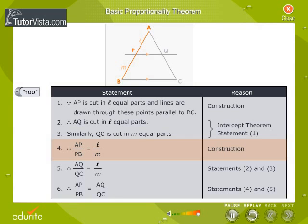AP by PB is equal to L by M, since P divides AB in the ratio L is to M. Therefore, AQ by QC is equal to L by M.